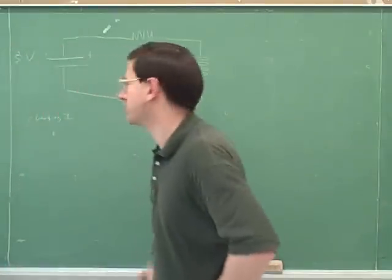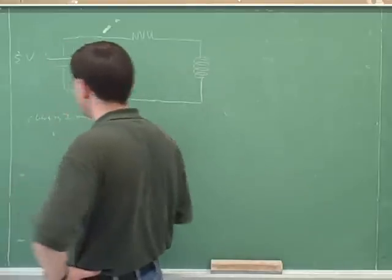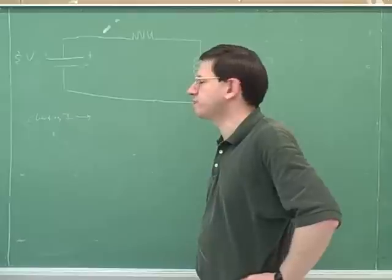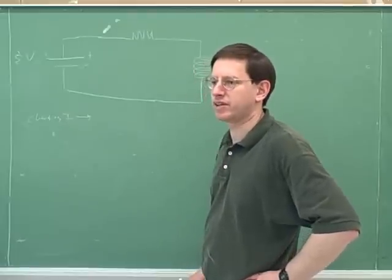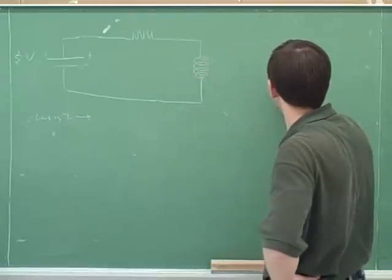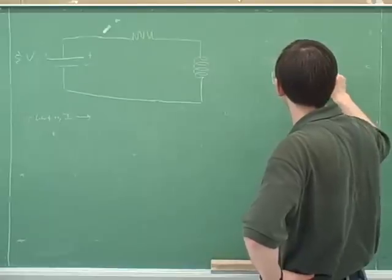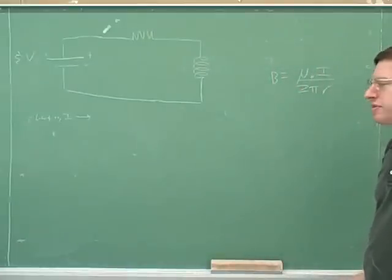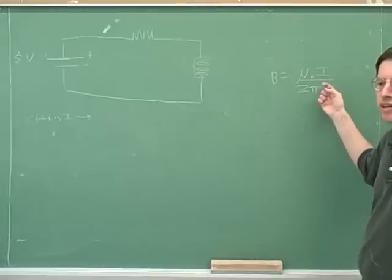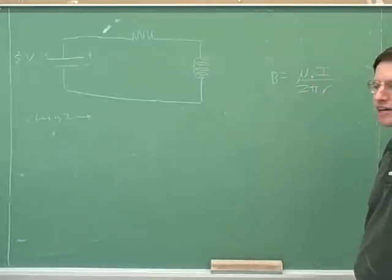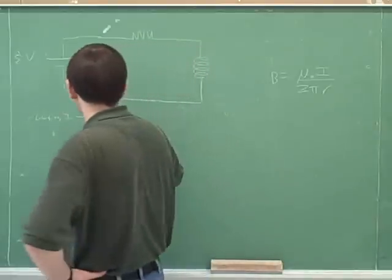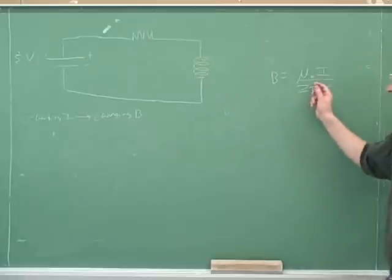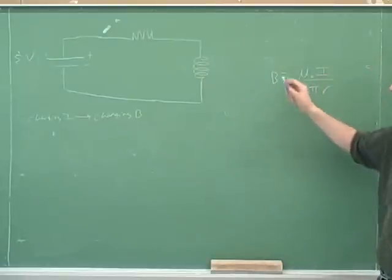Inductors are related to the idea of electromagnetic induction. Let's say that we have a changing current going through the inductor. We know that currents generate magnetic fields — this is our equation for the magnetic field generated by a long straight wire. Therefore, a changing current would give you a changing magnetic field. You can see that in this equation: changing I would change B.